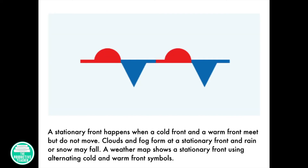A stationary front happens when a cold front and a warm front meet but do not move. Clouds and fog form at a stationary front and rain or snow may fall. A weather map shows a stationary front using alternating cold and warm front symbols.